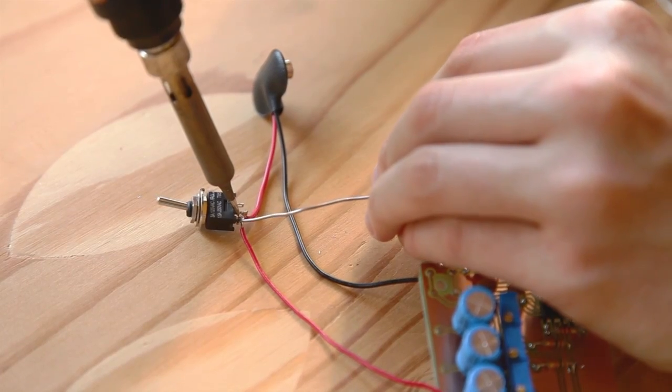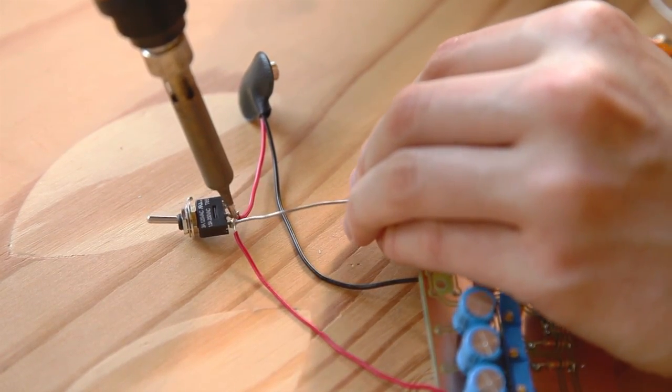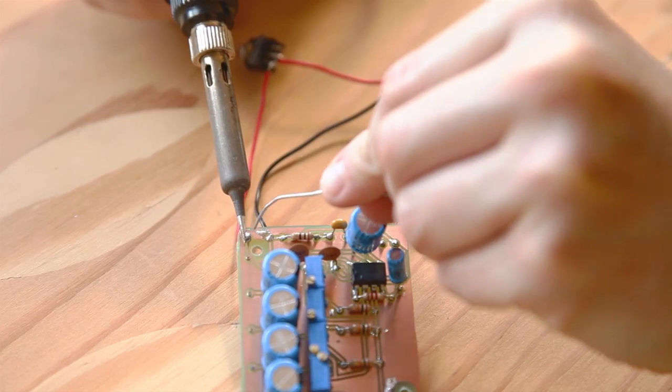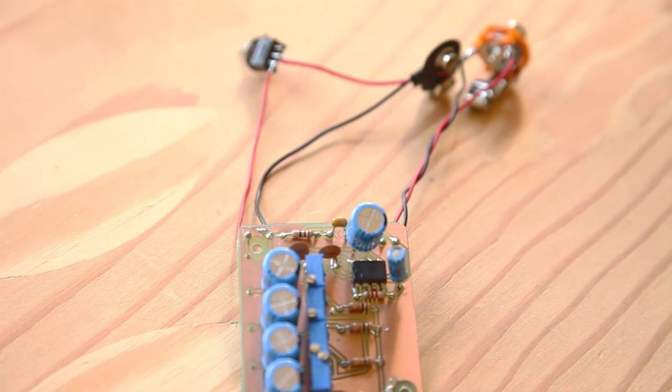Take a piece of red hookup wire and solder one end to the first pole on your SPDT, then solder the other end to the positive on the amp board.